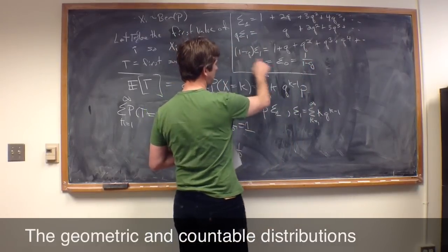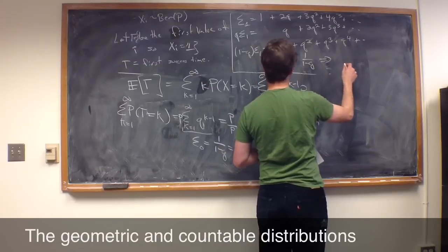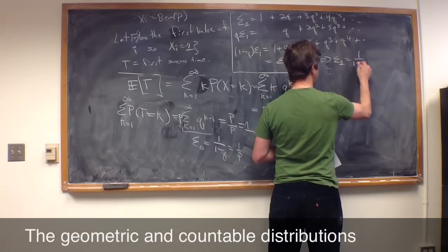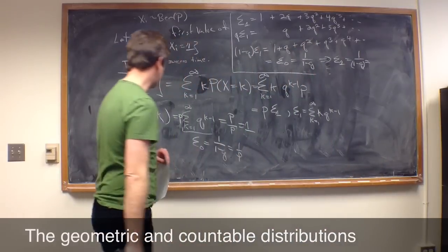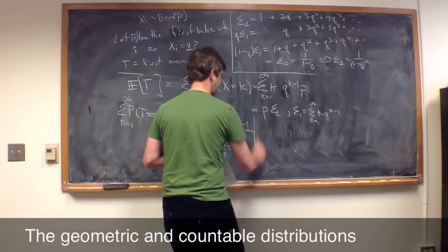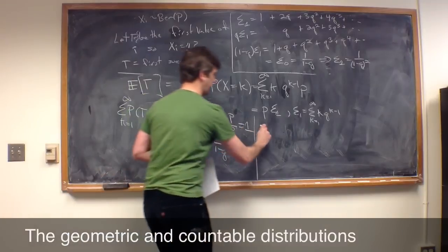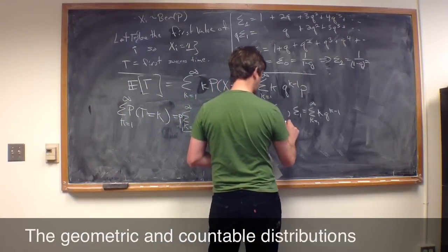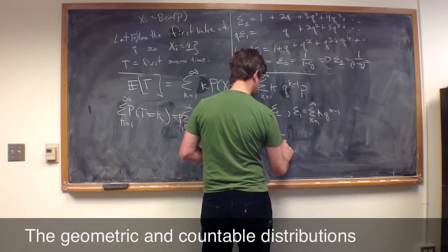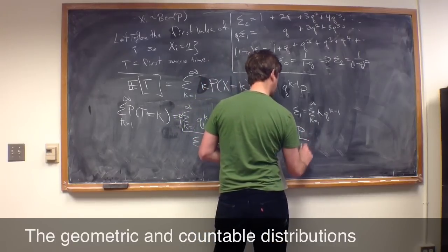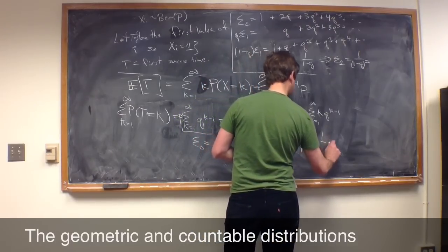So, if we solve then for sigma 1, that implies that sigma 1 is 1 over 1 minus Q squared. And lastly, if we go back to our original thing where we were calculating the expected value of T, we found that was P times sigma 1, which is 1 over 1 minus Q squared. But 1 minus Q squared is P squared, so that's P over P squared, and that's just 1 over P.